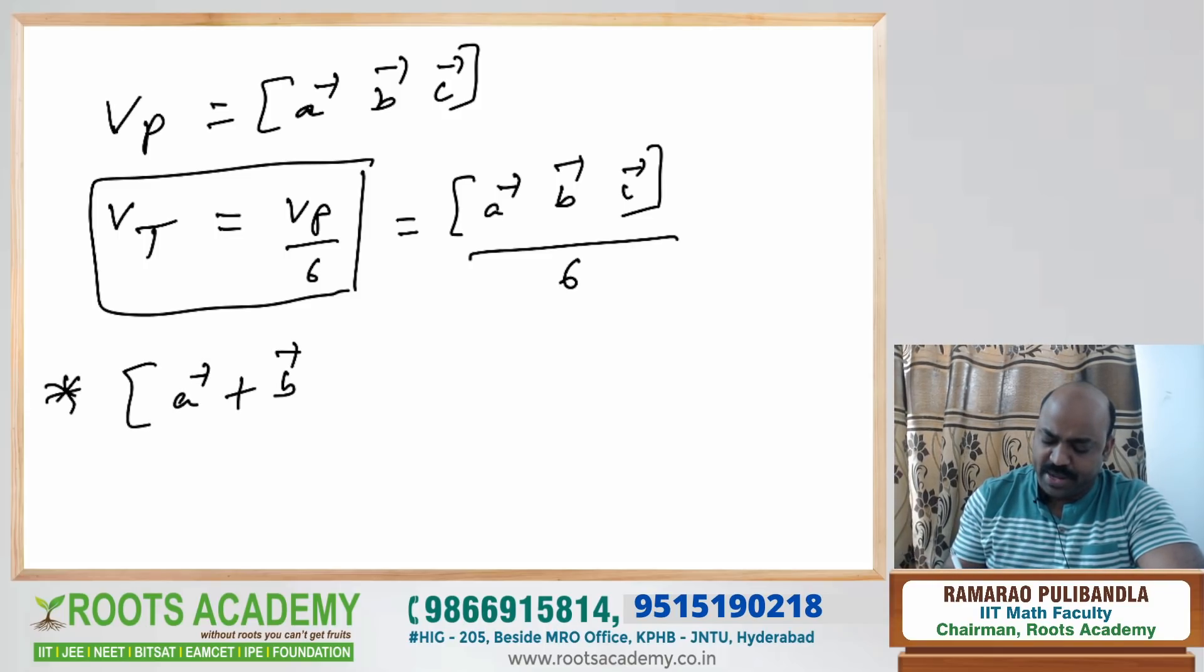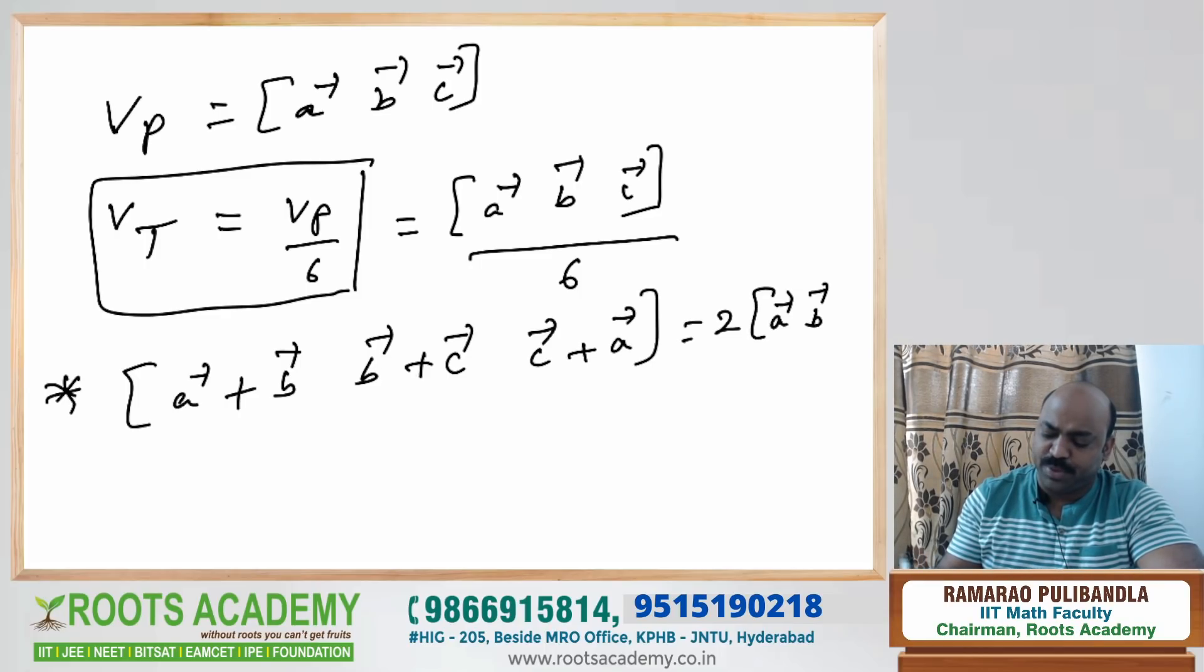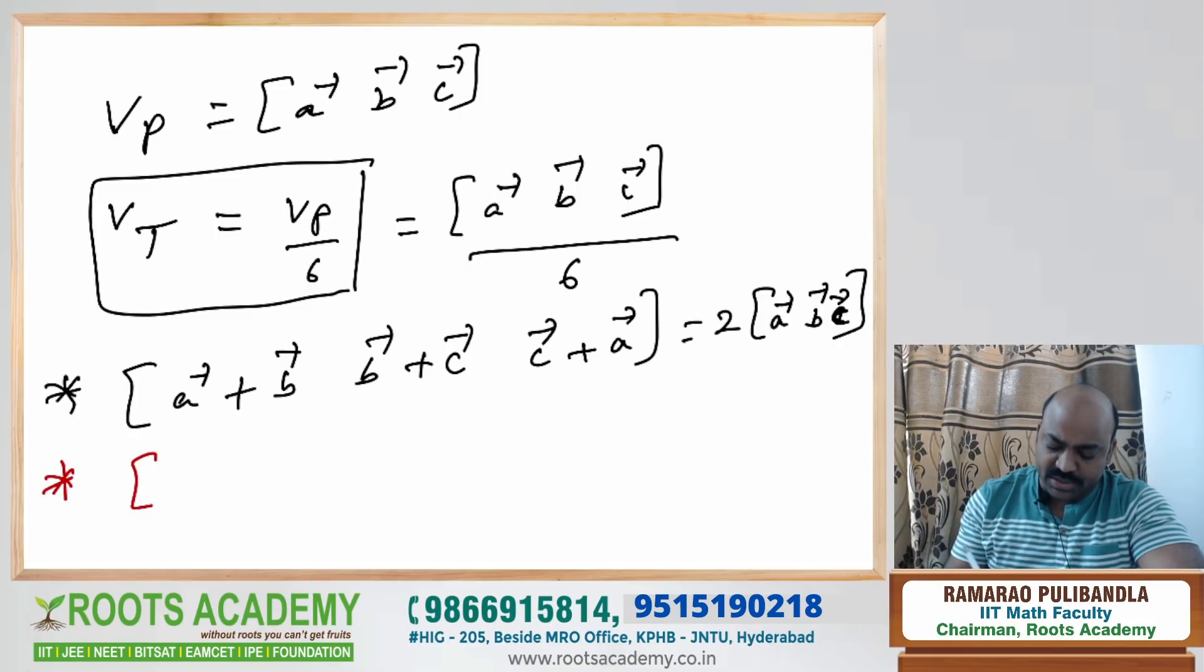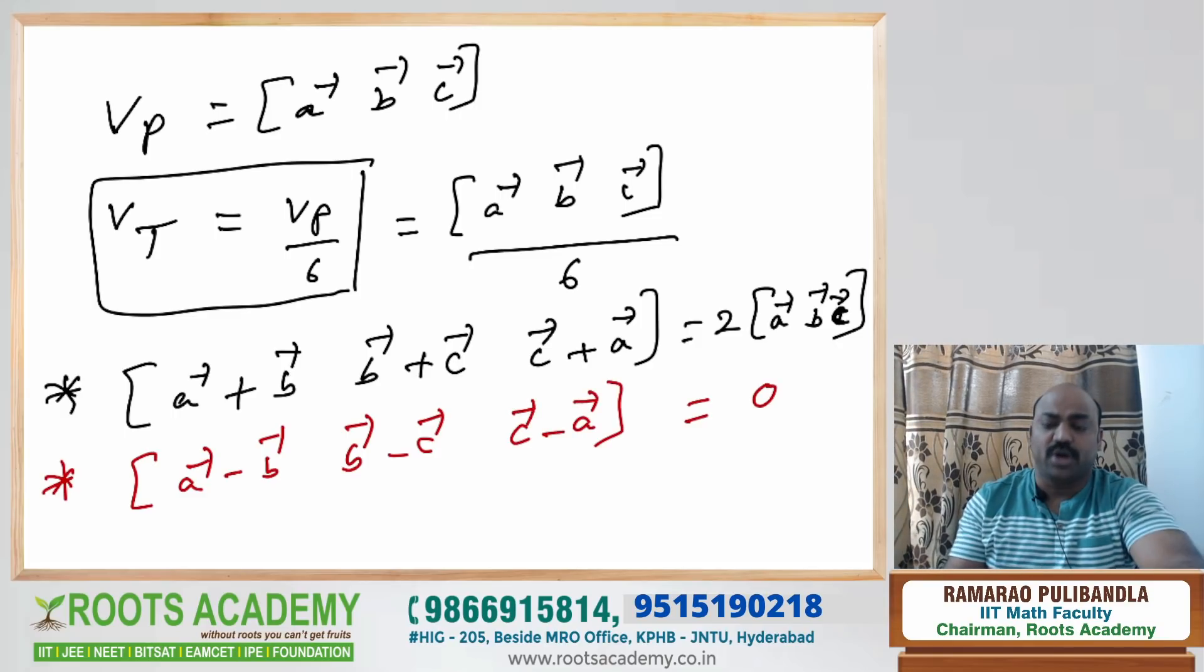Box of a plus b, b plus c and c plus a. Do you know how much its value is? It's two times of box abc. Beautiful results. Direct question this year will come. Box of a minus b, something is there. If I want box of a minus b, do you know this is zero?